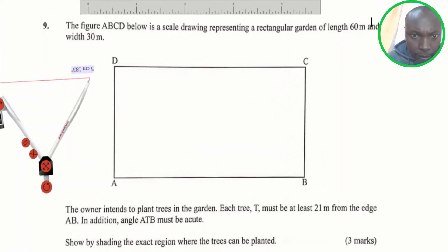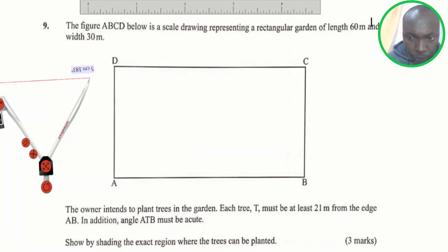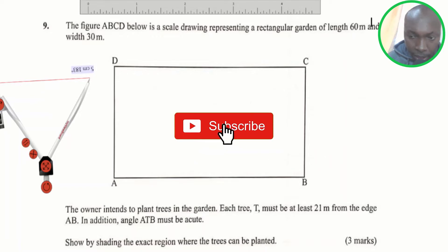The question reads: the figure ABCD below is a scale drawing representing a rectangular garden of length 60 meters and width 30 meters. The owner intends to plant trees in the garden. Each tree T must be at least 21 meters from the edge AB. In addition, angle ATB must be acute. Show by shading the exact region where the trees can be planted. Three marks.